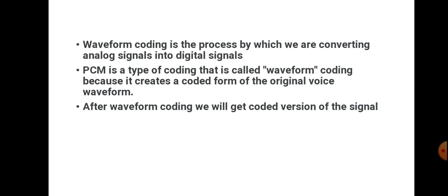You can use a code with a continuous time modulating signal. There is a carrier signal that corresponds to the continuous time modulating signal. The carrier signal amplitude is the modulating signal. There is angle modulation, phase modulation, and also frequency modulation, as well as amplitude modulation.